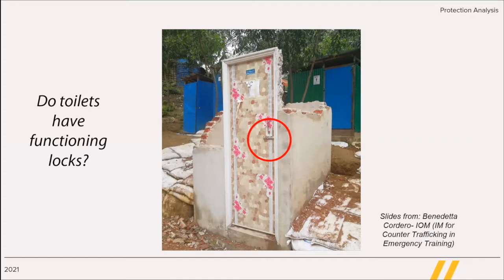Some examples of quantitative methods are household level surveys, key informant interviews with closed questionnaires — as in the case of the IOM DTM MSLA, multi-sector location assessments.